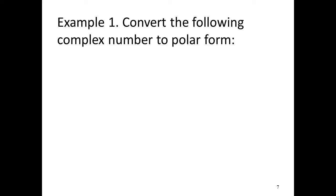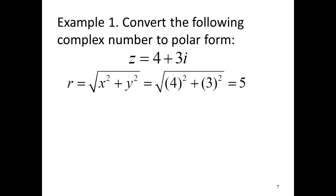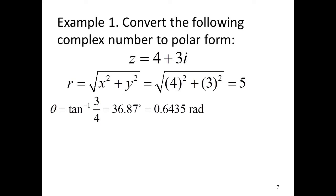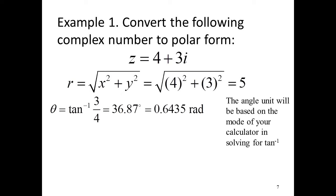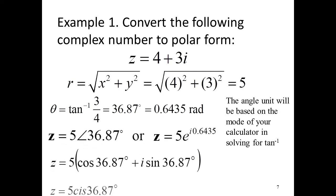Example 1: Convert the following complex number to polar form: z equals 4 plus 3i. The modulus r equals the square root of 4 squared plus 3 squared, which equals 5. Theta equals arctangent of 3 over 4, which equals 36.87 degrees or 0.6435 radians. So in polar form, we have the following answers — use whichever is required by your teacher.